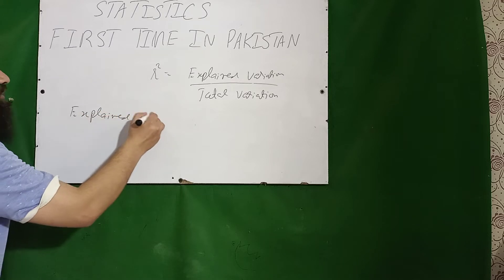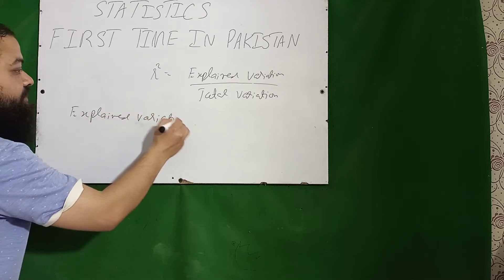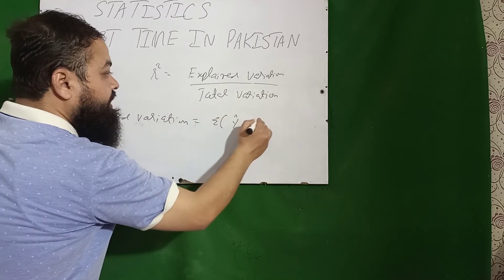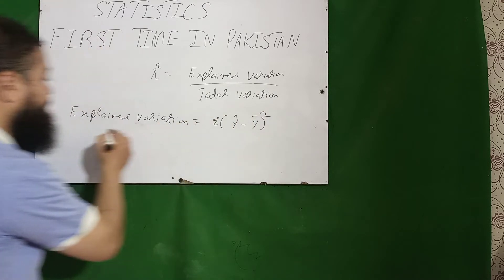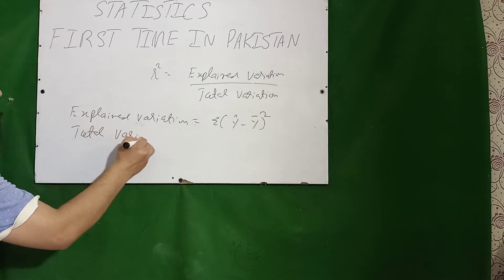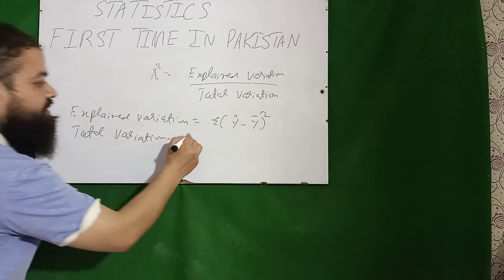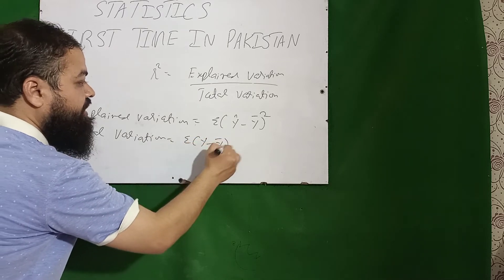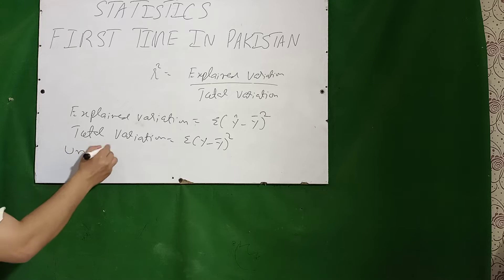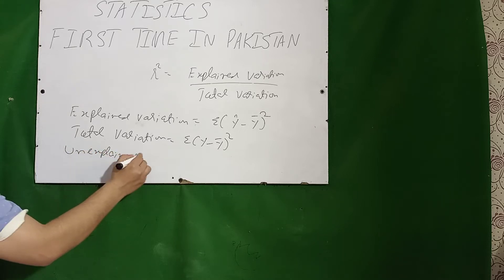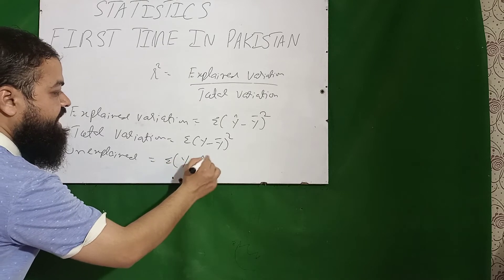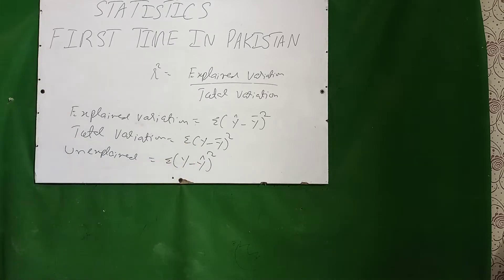This is also a very important question for all the papers. Explained variation means Σ(ŷ − ȳ)². Total variation means Σ(y − ȳ)². And unexplained variation is Σ(y − ŷ)². This is a very important concept.